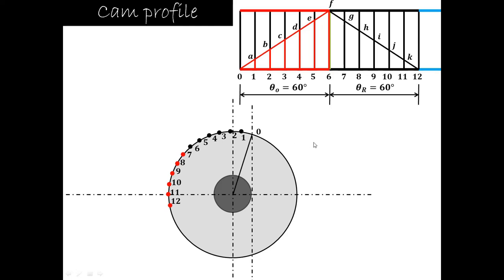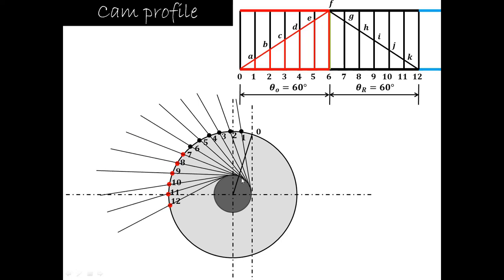The most important step is to draw tangents to the offset circle from each of the marked points 1 through 12. From each point, draw the tangent line to the offset circle. Then transfer the distances 1A, 2B, 3C, 4D, 5E, 6F, 7G, 8H, 9I, 10J, and 11K along their respective tangent lines. All these distances are transferred, and a smooth curve is drawn passing through points A, B, C, D, E, F up to K. This is the cam profile in the case of the offset knife edge follower. Thank you very much for watching.